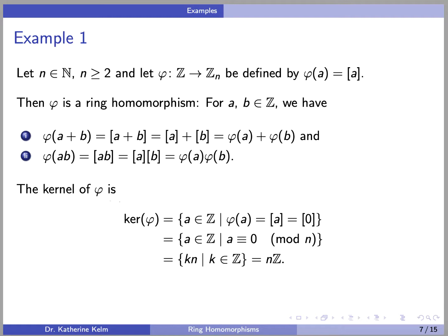As an example, let n be a natural number and let phi from Z to Zn be defined by phi(A) equals the class of A in Zn. We should be familiar with this as a group homomorphism, so property 1 is not a surprise. But in addition, phi is a ring homomorphism because the multiplication in the two rings is also preserved: phi(A + B) = phi(A) + phi(B) and phi(A · B) = phi(A) · phi(B). The kernel of phi is the set of all integers sent to the class of 0 — that is, the integers congruent to 0 mod n, which is just the multiples of n.